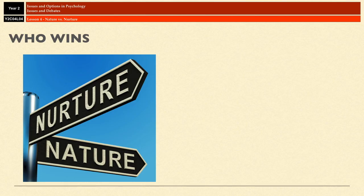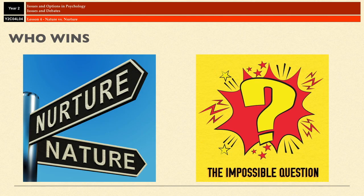Identical twins have had the same genes from birth and most likely the same environment from birth too — so how do you separate the two? Because of the difficulty of that question, psychologists don't really ask whether it's nature or nurture anymore. They now tend to focus on the individual contributions that both nature and nurture make to the things we do and the way we think.